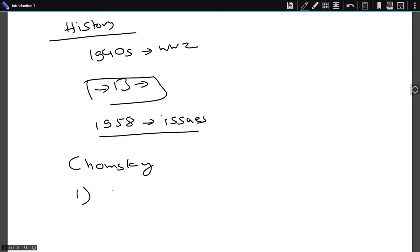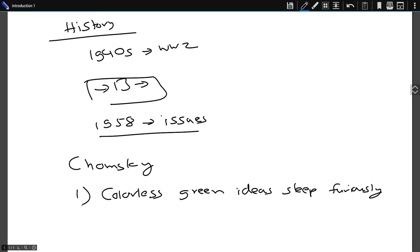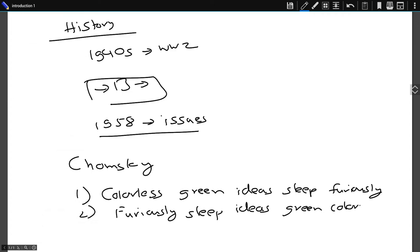Let's see these two examples. The first sentence: 'Colorless, green ideas sleep furiously.' And the other sentence: 'Furiously sleep ideas green and colorless.' Any speaker of the English language can say that sentence one is grammatically correct and sentence two is grammatically incorrect. And Chomsky felt that the same should be expected of such models.